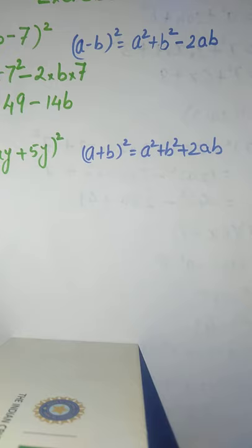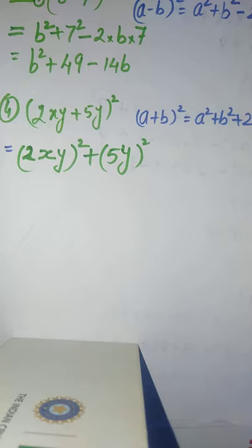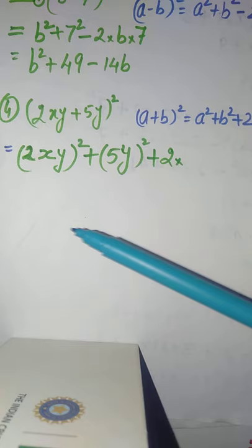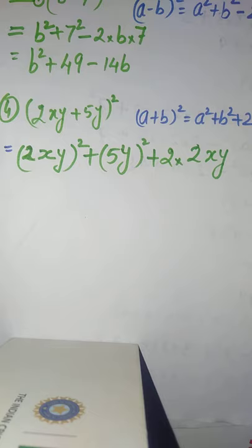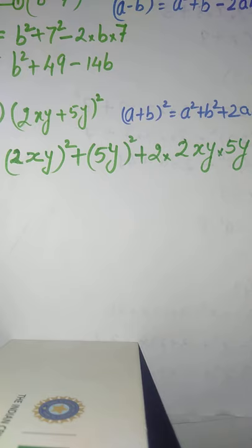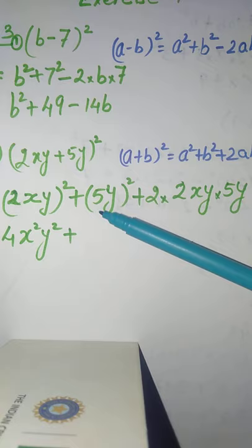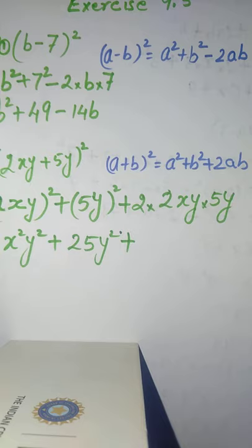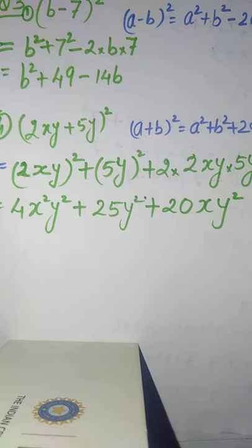So (2xy + 5y) whole square equals (2xy) whole square plus (5y) whole square plus 2 into 2xy into 5y. Now (2xy) square is 4x square y square, plus 25y square, plus 2 into 2 is 4, into 5 is 20, so 20xy square.